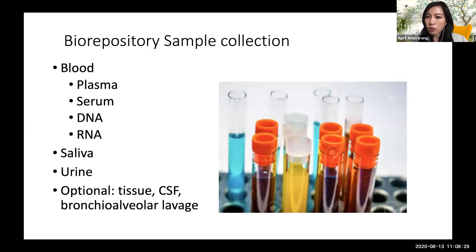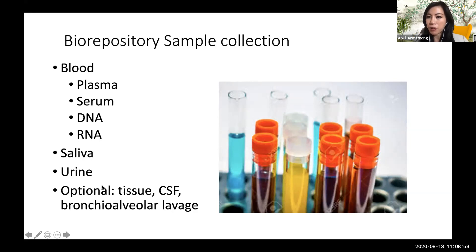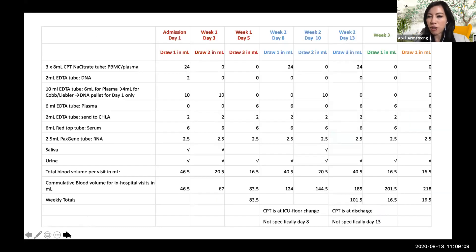Here is an overview of the different samples we collect from our patients. These include plasma, serum, extracted DNA and RNA, saliva, and urine — a standardized set of samples collected from each patient. If they happen to have pathological tissues, CSF, or BAL samples, our IRB is approved to collect those as well, and we're currently working on the processes for these optional specimens. For inpatients, we typically do serial collections following them, whereas for outpatients, we do a one-time collection.